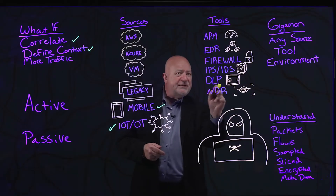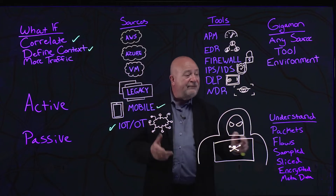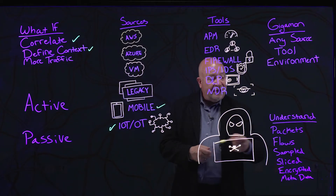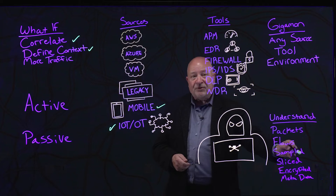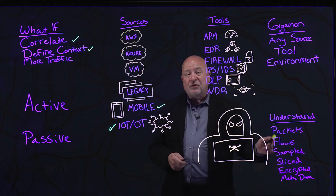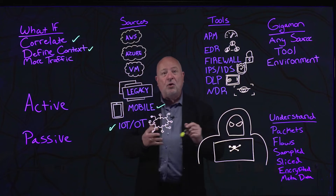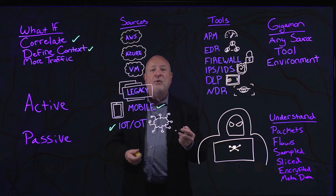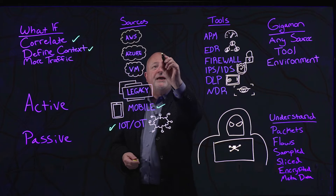It doesn't matter whether that intelligence is derived from traffic at the raw packet level, the flow level, the sampled level, sliced, whether it's decrypted or metadata. We can pull it all together and create what we call the Gigamon Deep Observability Pipeline.